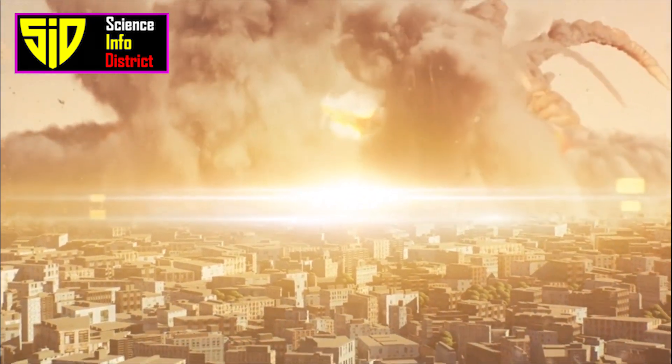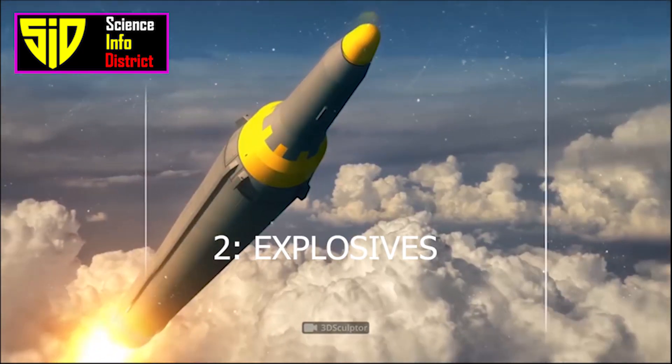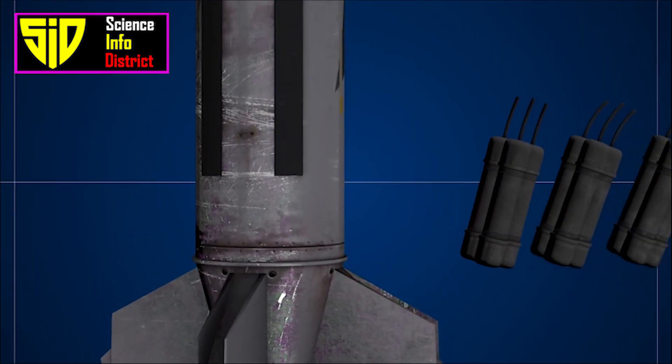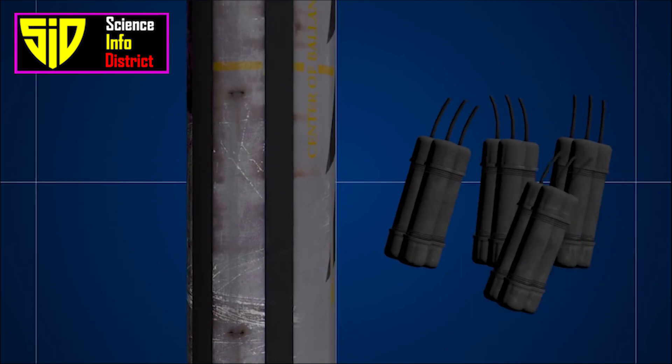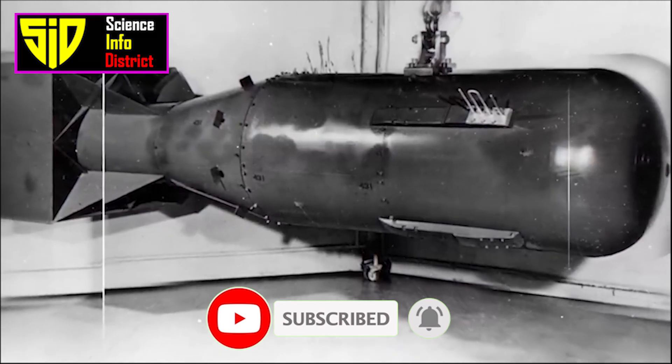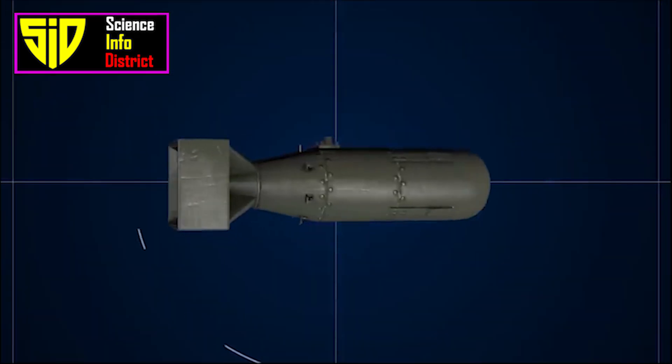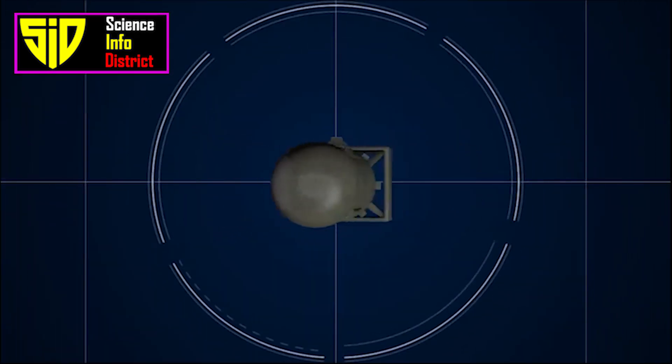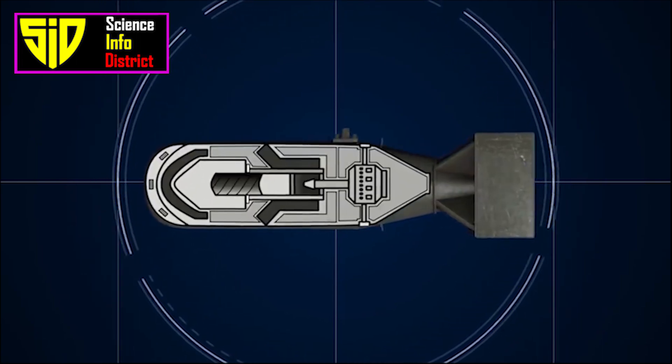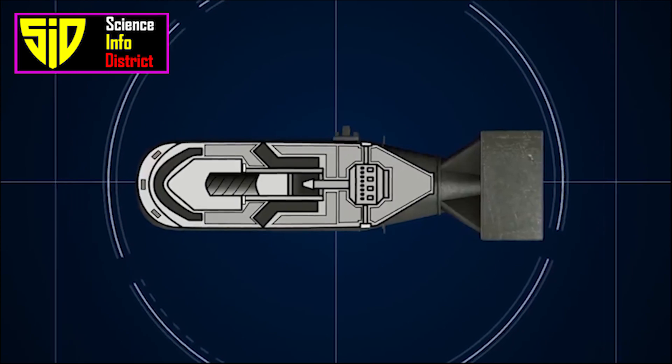Conventional Explosives: The nuclear core is surrounded by conventional explosives, such as TNT. These explosives are used to compress the nuclear core, causing the atoms to split and release a tremendous amount of energy. This is known as the implosion method, as the core is imploded upon itself to initiate the chain reaction.